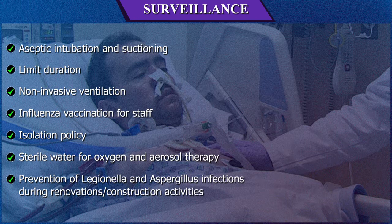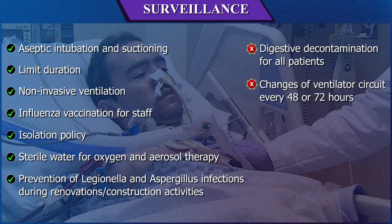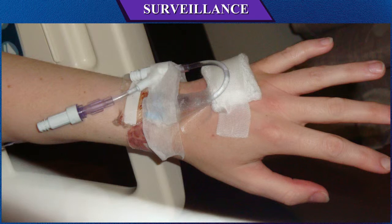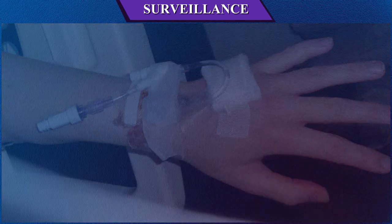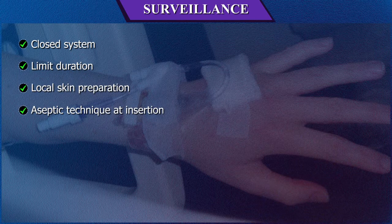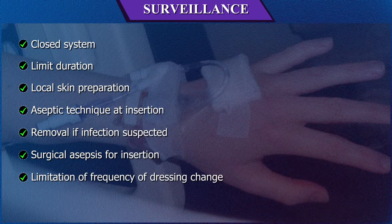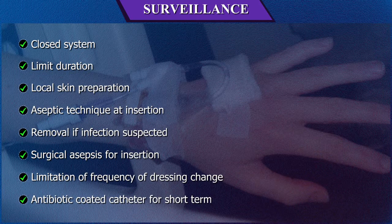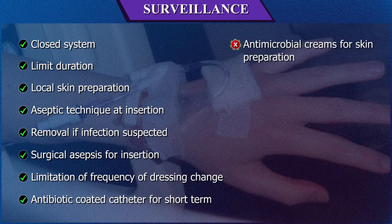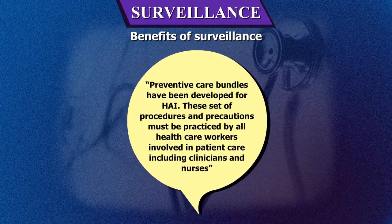Measures for prevention of hospital-acquired infections: Urinary tract infections — proven effective: limit duration of catheter, aseptic technique at insertion, maintain closed drainage. Surgical site infections — proven effective: surgical technique, clean operating environment, staff attire, limiting preoperative hospital stay, preoperative shower, local skin preparation, optimal antibiotic prophylaxis, aseptic practice in the operating room, and surgical wound surveillance. Pneumonia (ventilator-associated) — proven effective: aseptic intubation and suctioning, limit duration, non-invasive ventilation, influenza vaccination for staff, isolation policy, sterile water for oxygen and aerosol therapy. Proven not effective: digestive decontamination for all patients, changes of ventilator circuit every 48 or 72 hours. Vascular device infections — proven effective: closed system, limit duration, local skin preparation, aseptic technique at insertion, removal if infection suspected, surgical asepsis for central line insertion, limitation of dressing change frequency, antibiotic-coated catheter for short term. Proven not effective: antimicrobial creams for skin preparation.